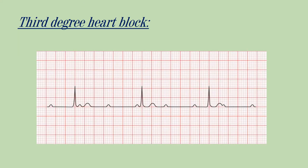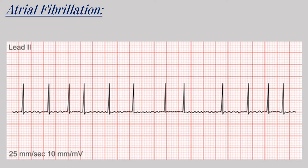In third degree heart block, there is no connection between the atria and the ventricles. The atria contract on their own via the SA node, and the ventricles are excited by a slow focus within the ventricular muscle. So there is no relation at all between the P wave and the QRS.